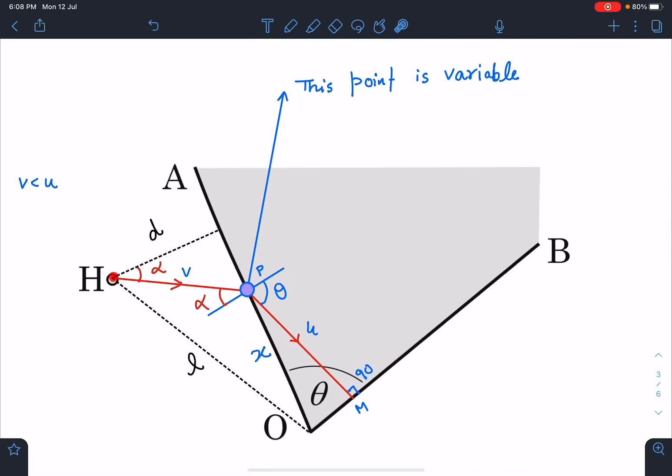So let's choose a variable point on this bank - we are choosing a variable point P, it can be anywhere. Once this man reaches here, he has to reach this line OB in minimum time.